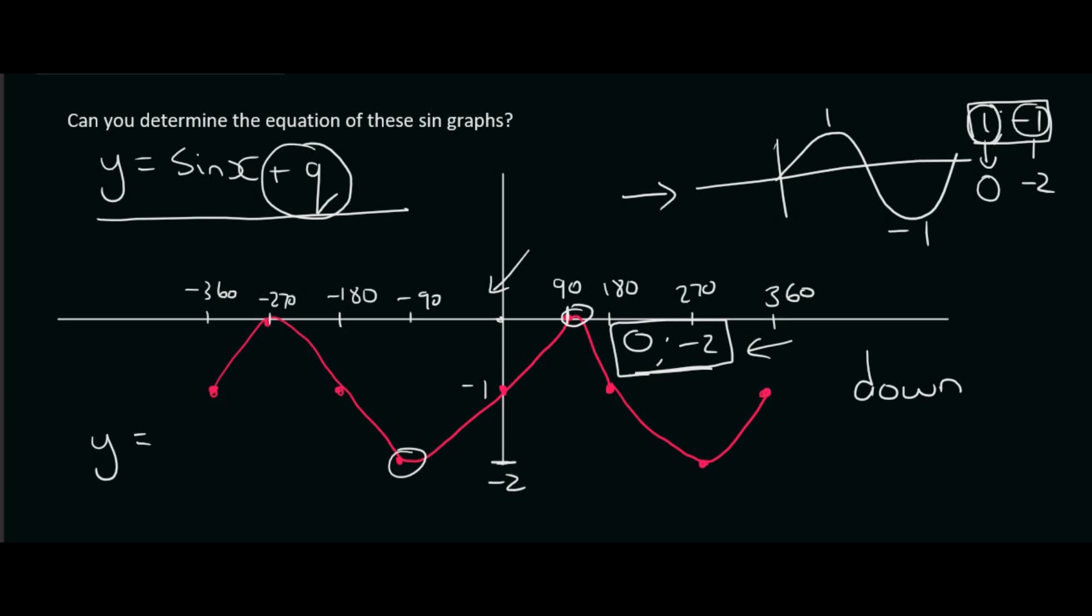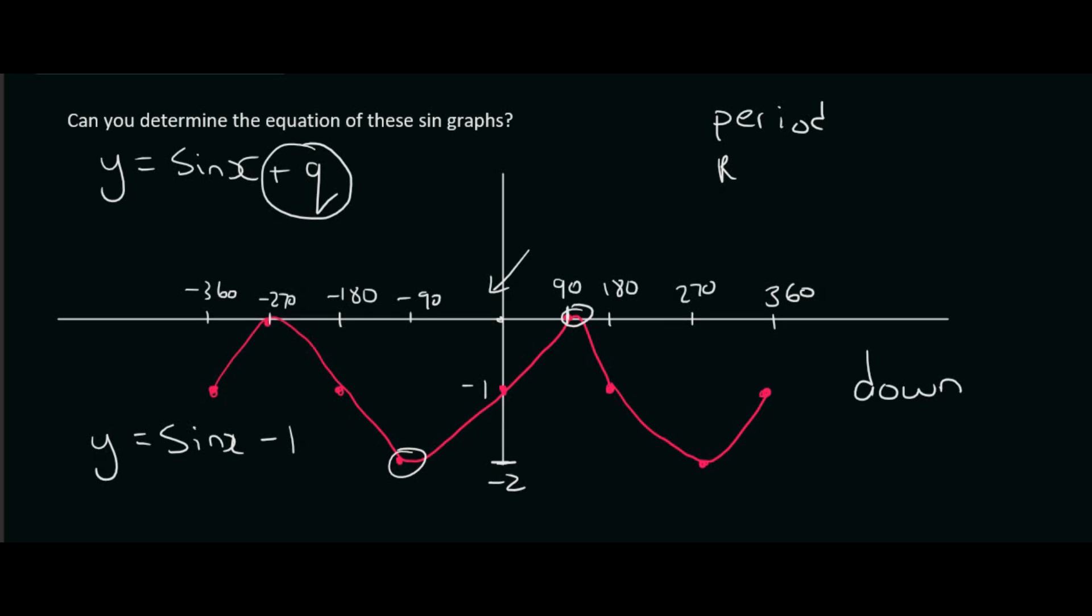So its equation will be y equals sin x minus 1. So let's quickly take a look at the period, the range, the domain, and the amplitude. So the period for a sin graph is always 360 degrees in grade 10, no matter what.